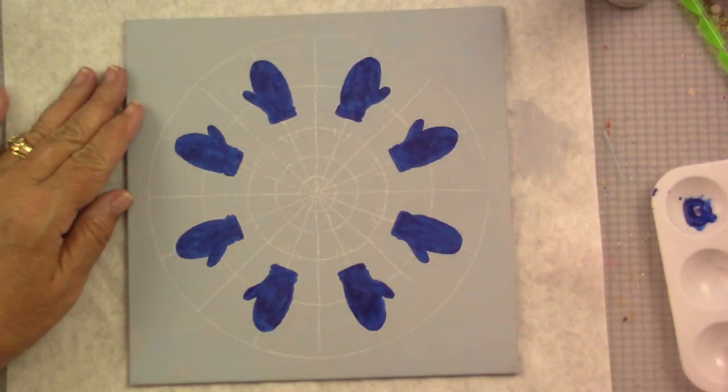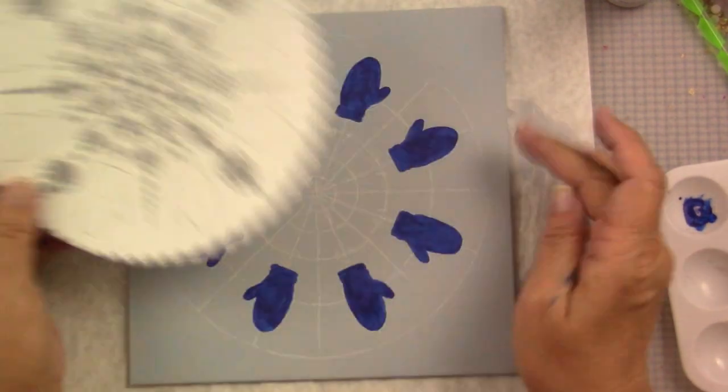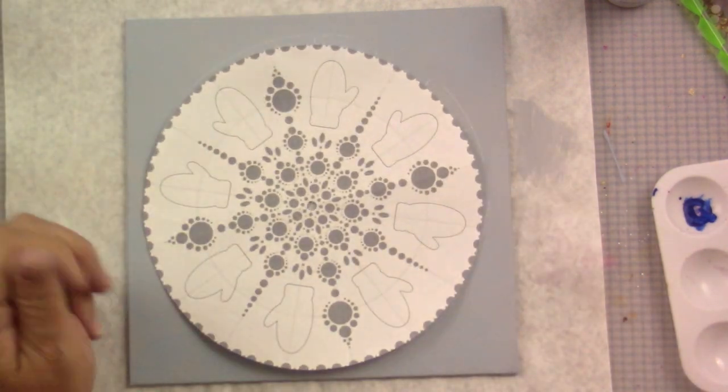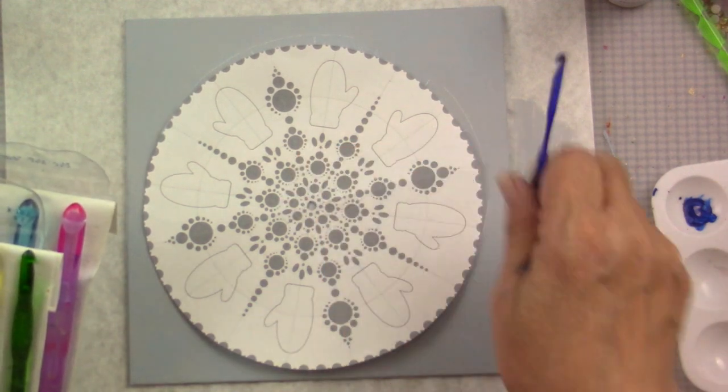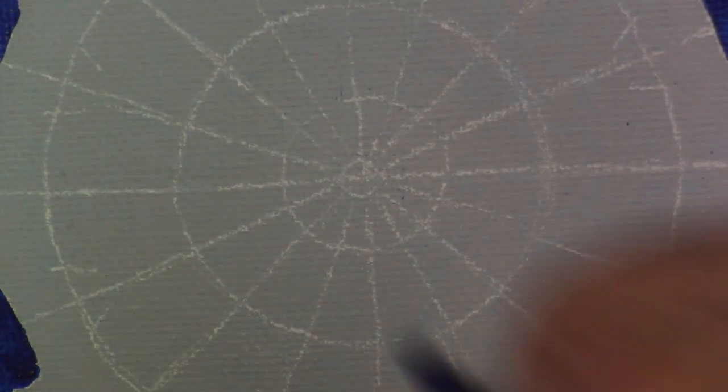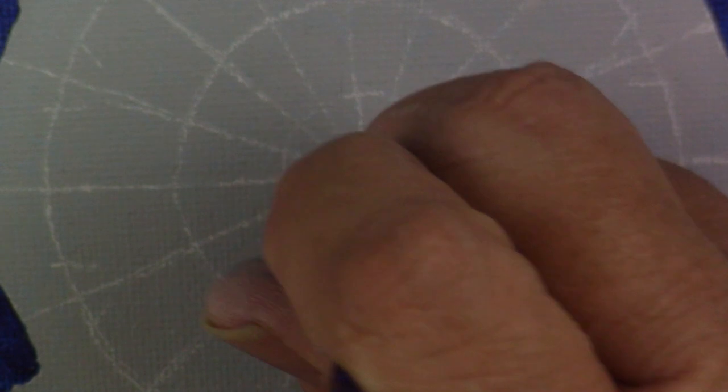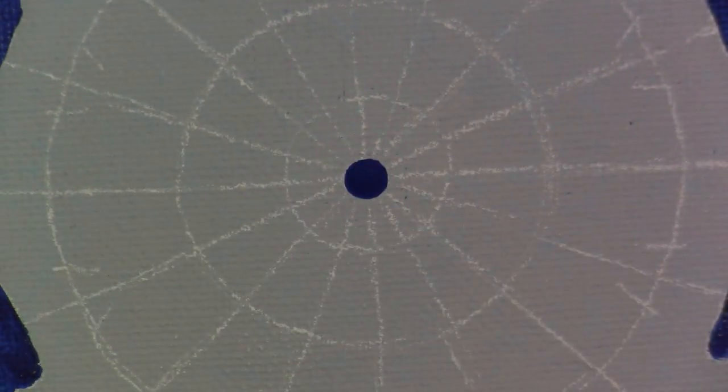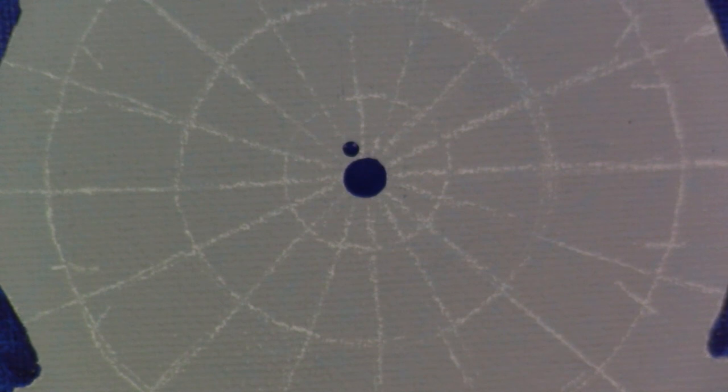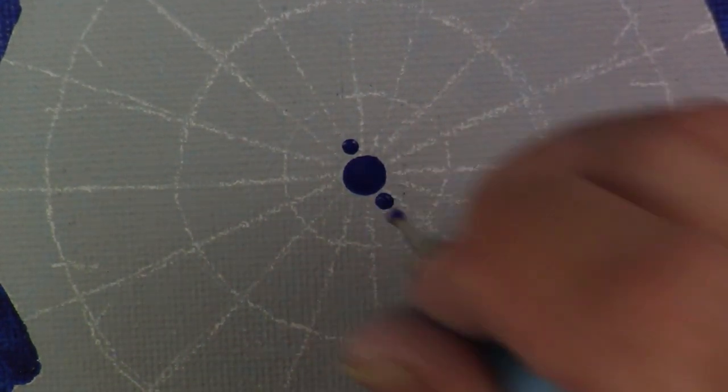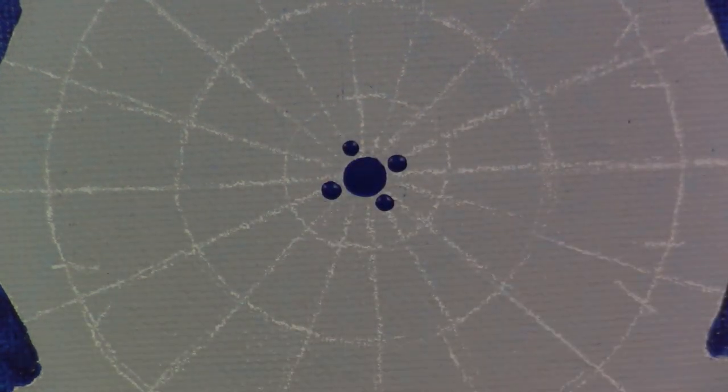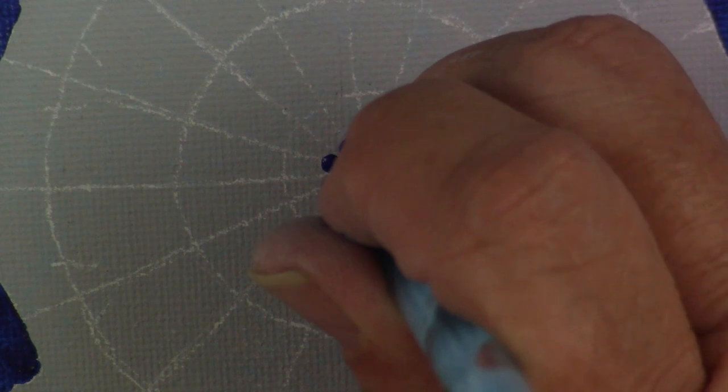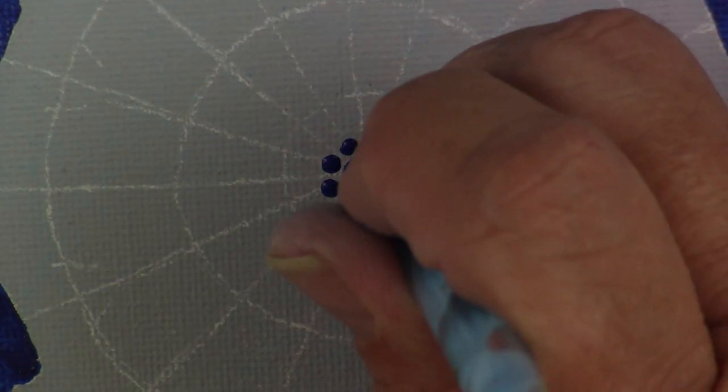All eight mittens are done. Now I am ready to start painting. I'm using the pattern. These are full-size patterns. What's nice about them is we don't all use the same tools, so you can use the pattern to decide what tool size is appropriate for you. I'm going to place my center dot.